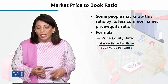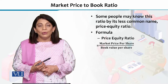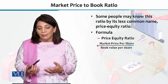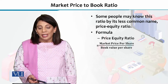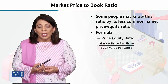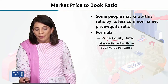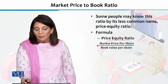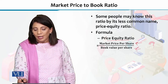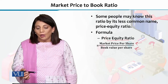Some people may know this ratio by its less common name, which is the price to equity ratio. So market price to book ratio and price to equity ratio are two names for the same measure. If we look at the formula of market price to book ratio, it is price per share divided by book value per share.